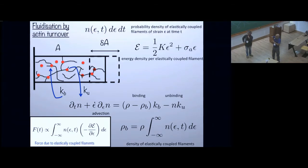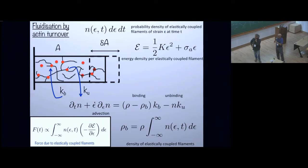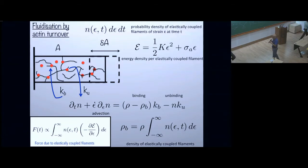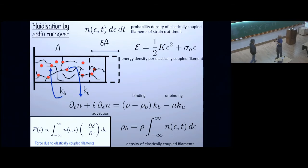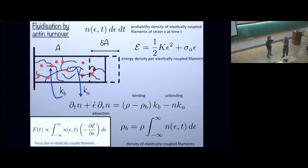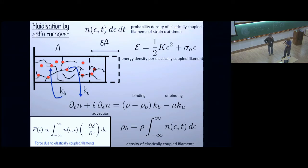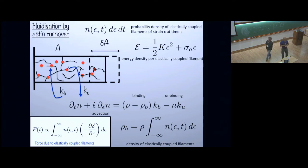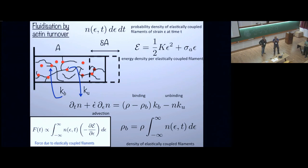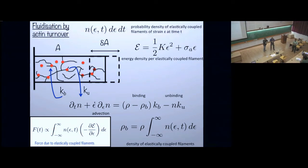Regarding detailed balance: in this model, the ratio k_b over k_u is not e to the power of the energy difference — it doesn't satisfy detailed balance. It would be interesting to look at the difference in behavior when in detailed balance versus when not. With that, let's thank the speakers of this session.